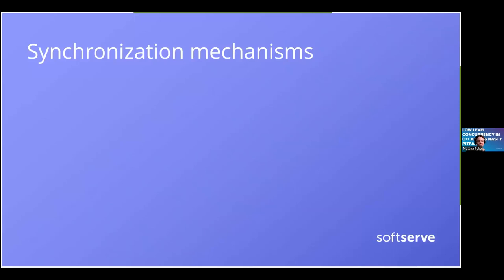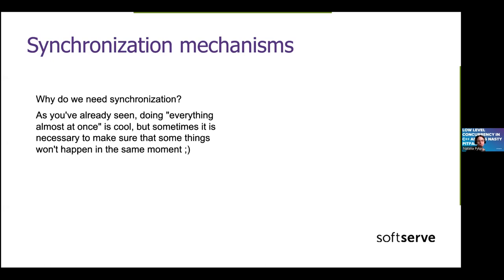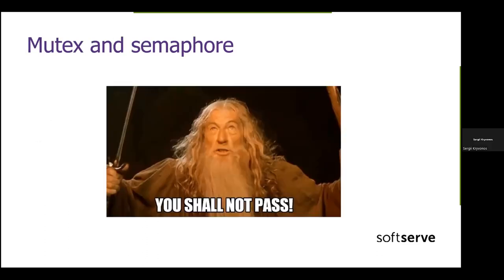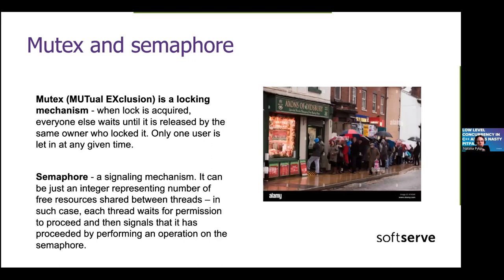Now a short fragment about synchronization mechanisms. For thread-hostile methods especially — and most methods are thread-hostile — doing everything at once is great, but sometimes it requires some extra effort to make sure that the intended plan will actually take place without problems. The most popular synchronization or access control mechanisms are mutexes and semaphores.